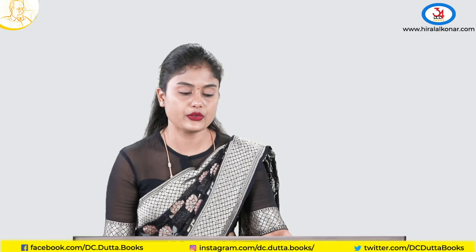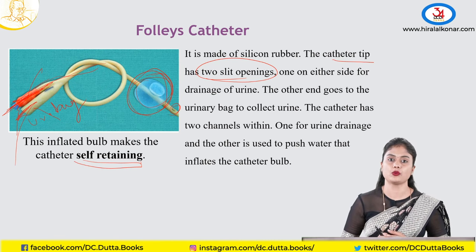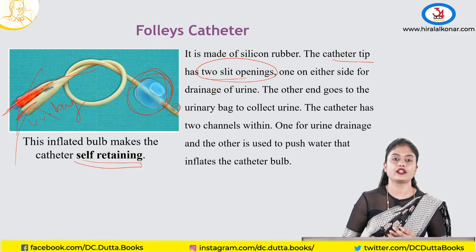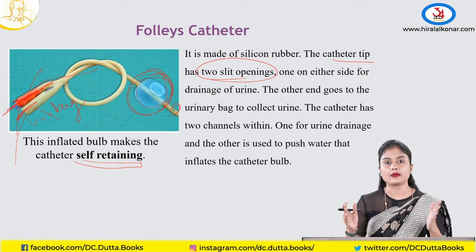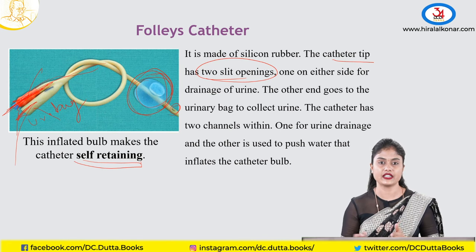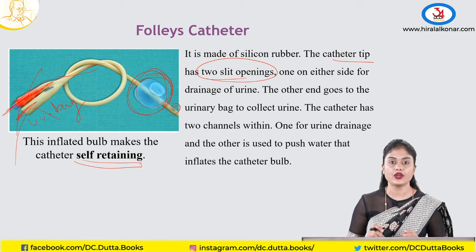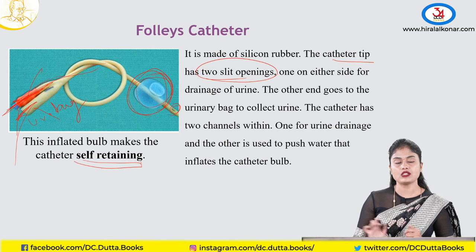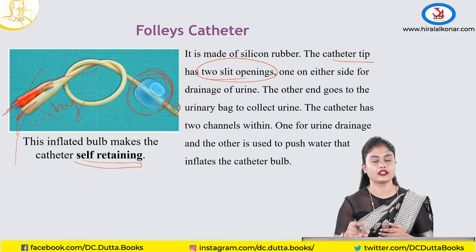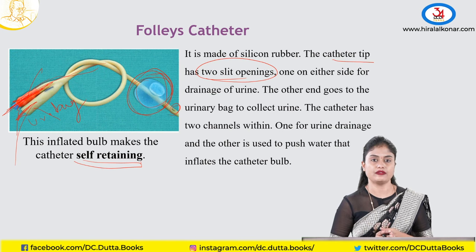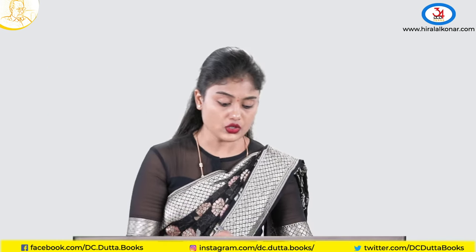Examiners ask: what do you use to inflate the bulb? We preferably use distilled water. In emergencies, normal saline can be used, but it is not preferred because when used for a long time — say 10 to 15 days — the saline can crystallize, making it difficult to remove the catheter. If there is a bladder injury and the catheter must stay for more than 2–3 weeks, you must use distilled water.